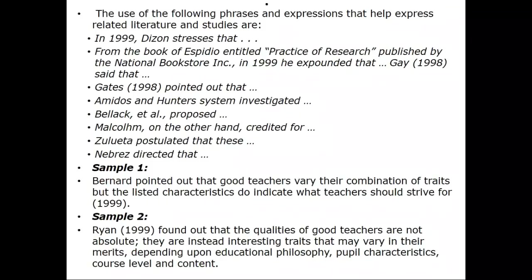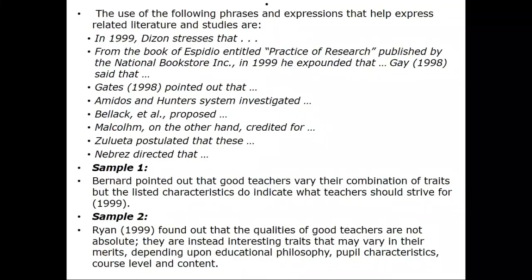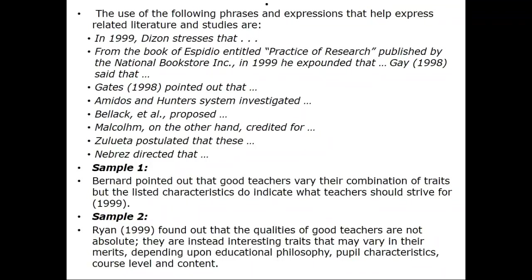Here are examples you can follow. Sample one: Bernard pointed out that good teachers vary their combination of traits, but the listed characteristics do indicate what teachers should strive for. Sample two: Rain (1999) found out that the qualities of good teachers are not absolute; they are traits that may vary in their merits depending upon educational philosophy, personal characteristics, course level, and content.